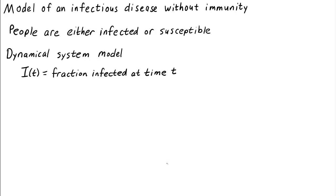Let's let i be the fraction of people infected at time t, and s be the fraction of people susceptible at time t. The idea of the model is that susceptible people can become infected, and when infected people recover, they go back to being susceptible.